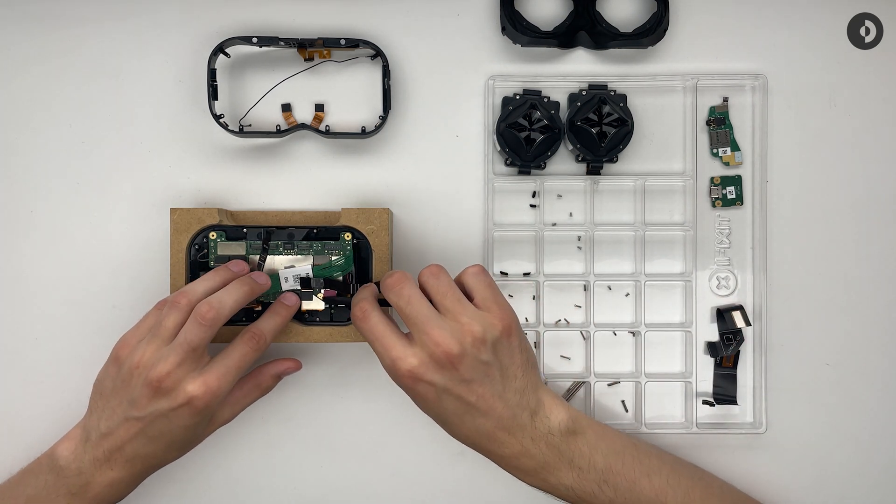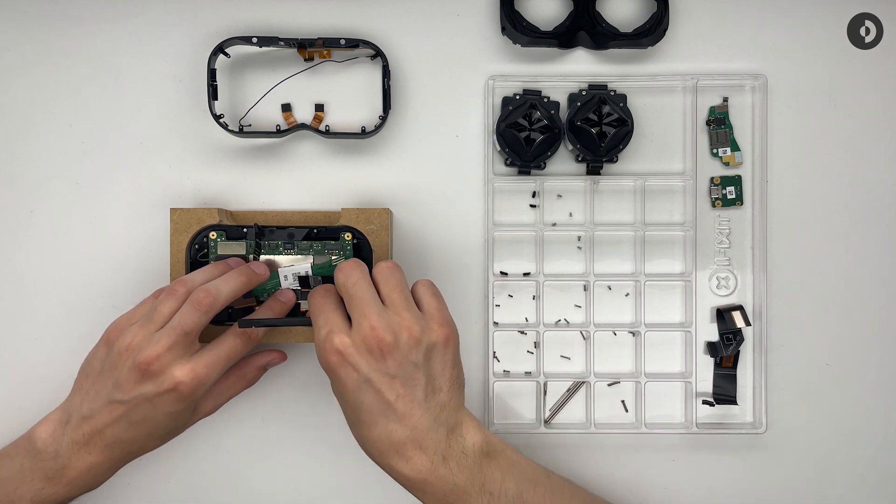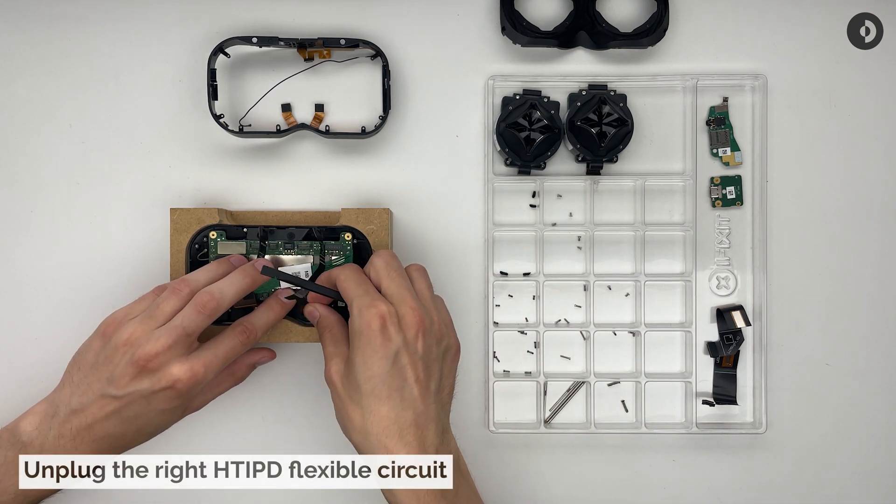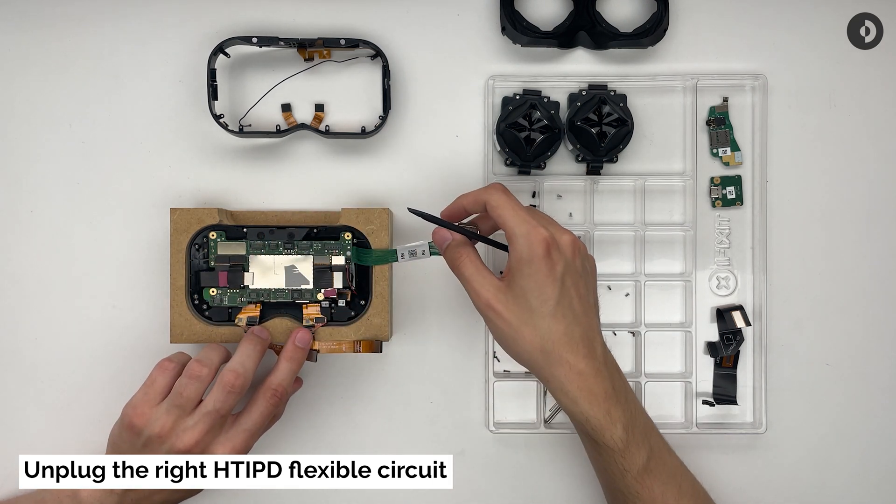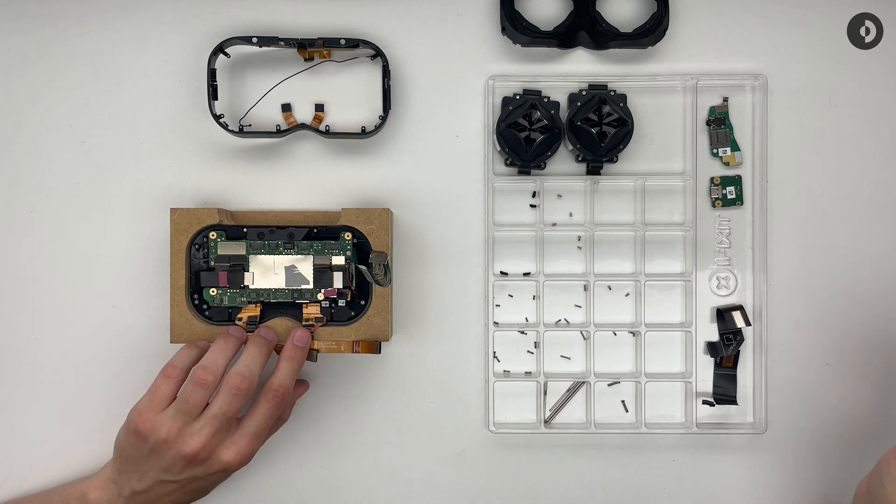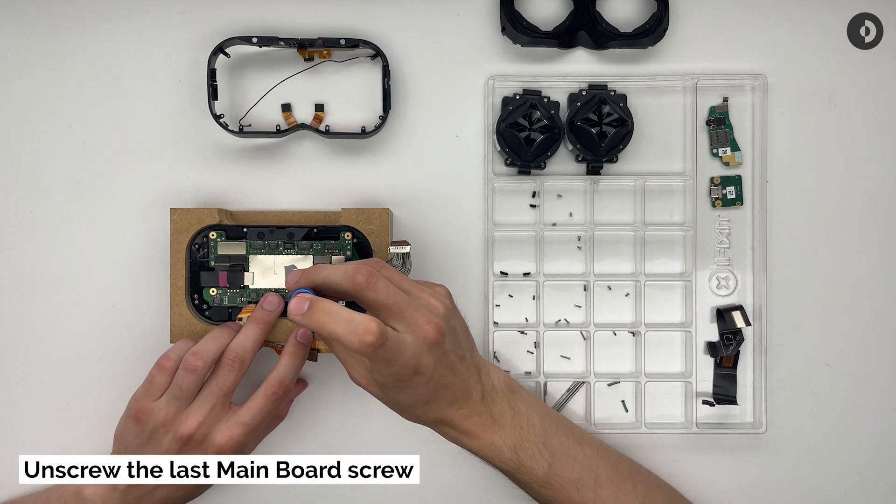You can now disconnect the second hand-tracking FPC. Underneath this FPC is one last screw. Remove it.